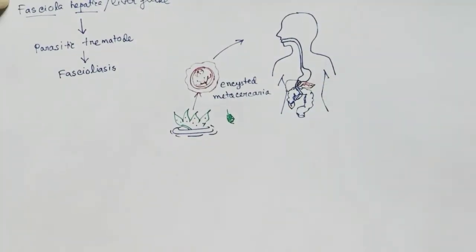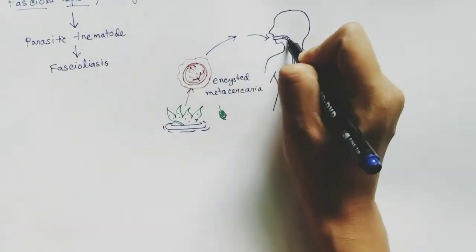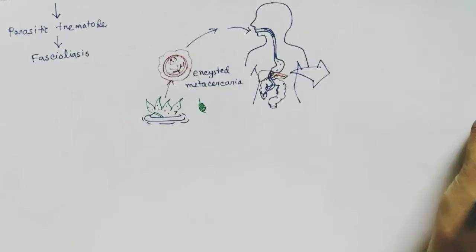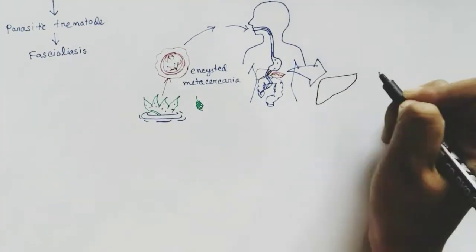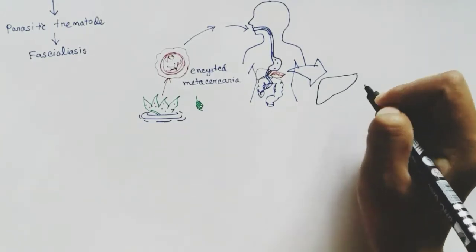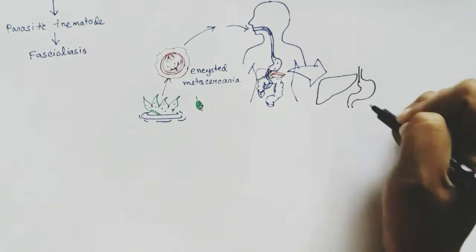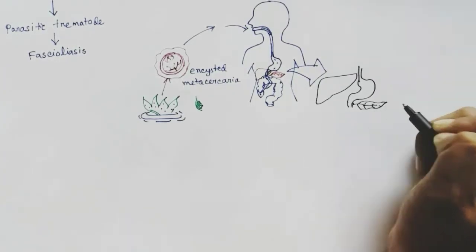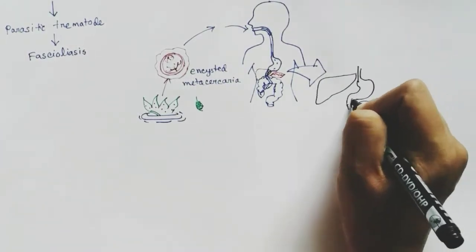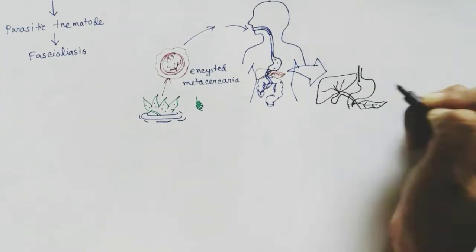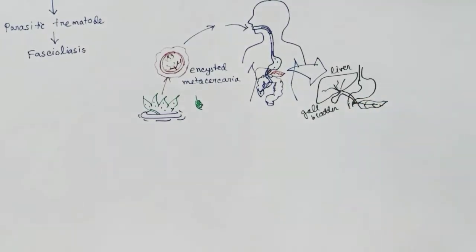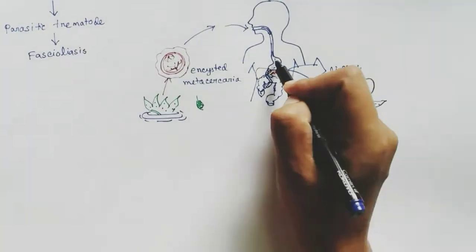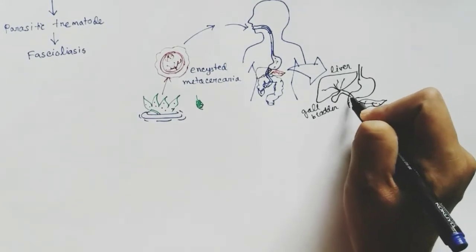After reaching the small intestine, the Fasciola metacercaria penetrates the wall of the duodenum and reaches the liver, attacking the liver cells and also the gallbladder. This is the region of the duodenum and the liver and the gallbladder, connecting to the duct of the pancreas.